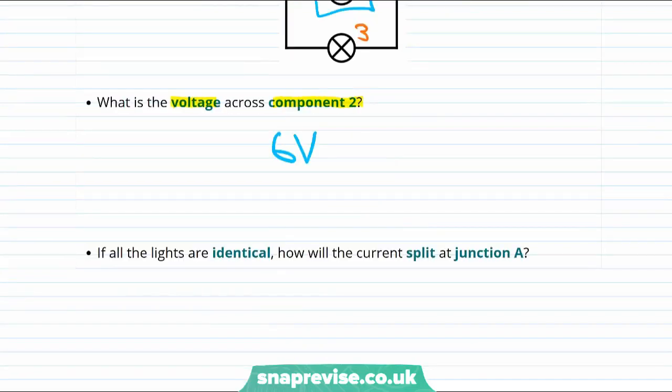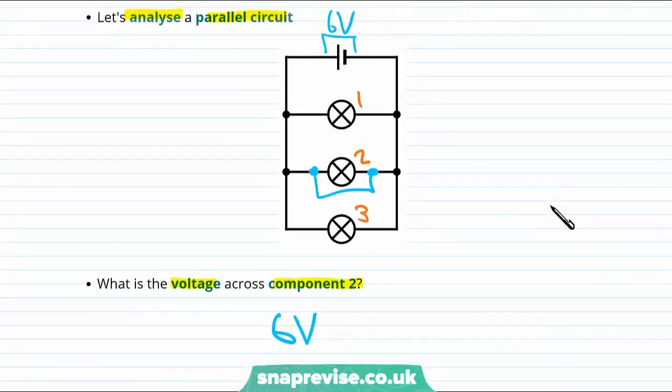The second question is more difficult. The question is if all of these light bulbs are identical, how will the current split at junction A? So let's take a look back at this diagram. I have drawn an arrow here to show which junction I mean by junction A. Now the important thing to answer this question is that we said that the light bulbs one, two and three are all identical or all the same.